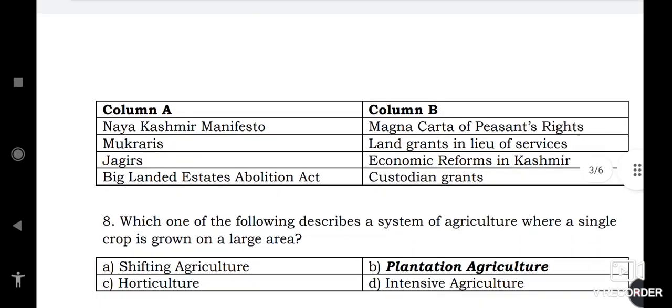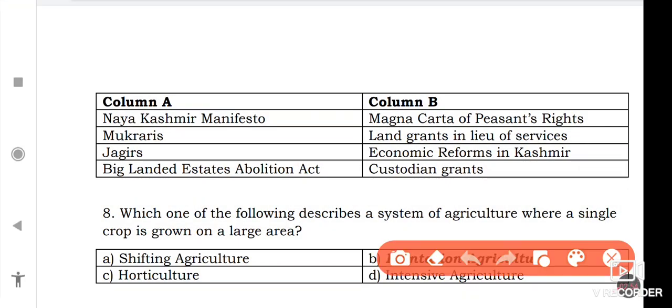Match the following. Naya Kashmir Manifesto is for Economic Reforms. Mukraris is for Custodian Grants. Jagirs is for Land Grants in Lieu of Services. Big Landed Estates Abolition Act is for Magna Carta of Peasants' Rights.